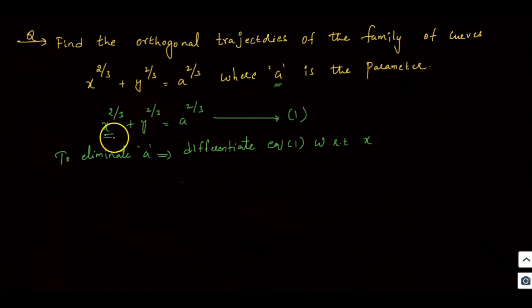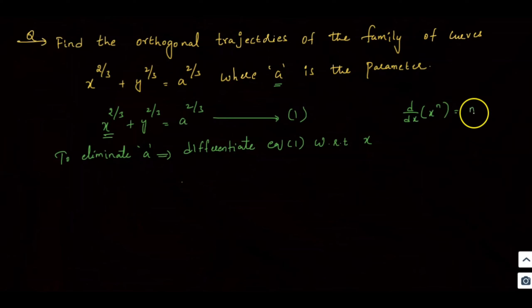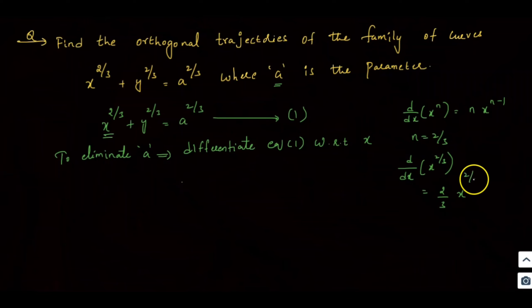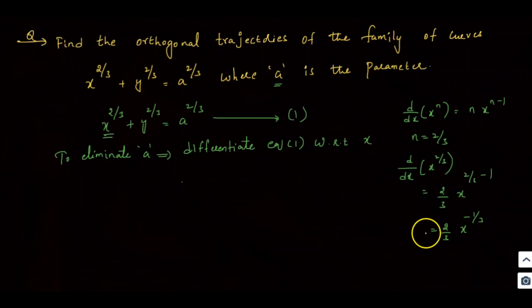Differentiating x^(2/3), we use the formula d/dx of x^n = n·x^(n-1). So d/dx of x^(2/3) = (2/3)·x^(2/3 - 1) = (2/3)·x^(-1/3).